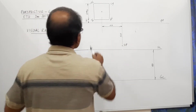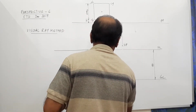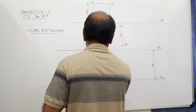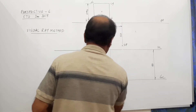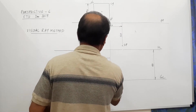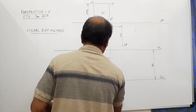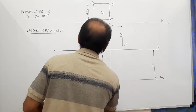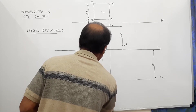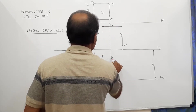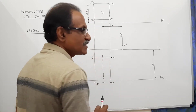The elevation of the object is drawn by dropping the plan down and completing the elevation. The elevation points are labeled a dash, b dash, c dash, d dash, e dash, f dash, g dash, h dash. This is the elevation of the object.